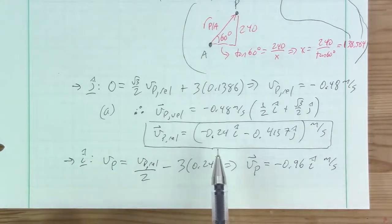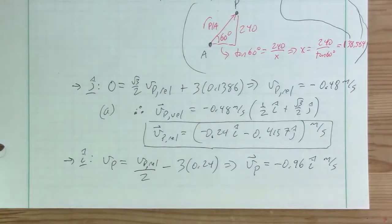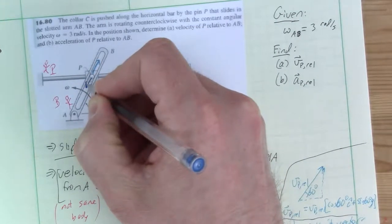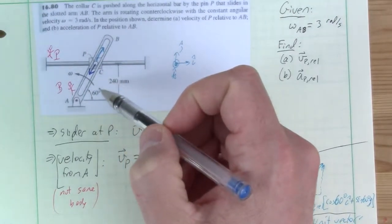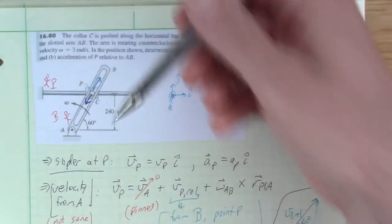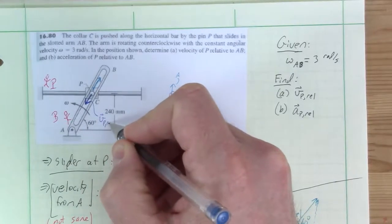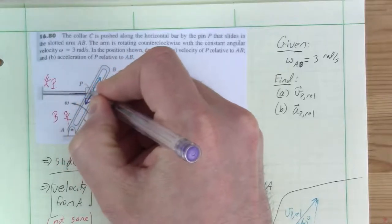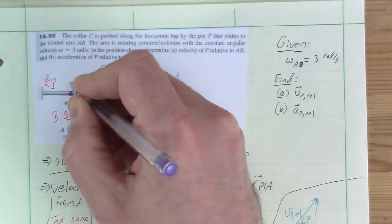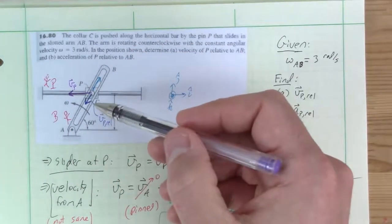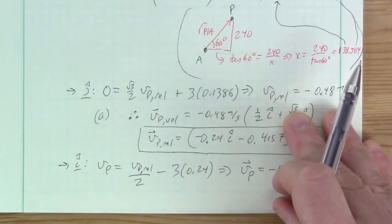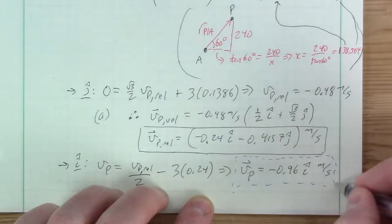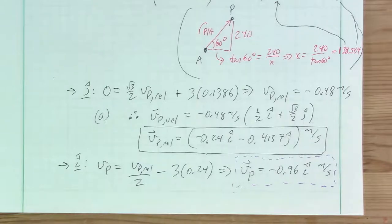This makes sense: P's true absolute motion is purely in the negative i-hat direction (left), while relative to the rotating bar AB, P moves down the slot — negative i-hat and negative j-hat along the 60-degree line. The absolute velocity has only a horizontal component while the relative velocity has components along the bar direction. Now we move into acceleration, which is the most complicated version of this analysis.